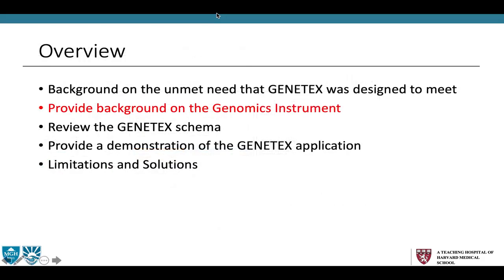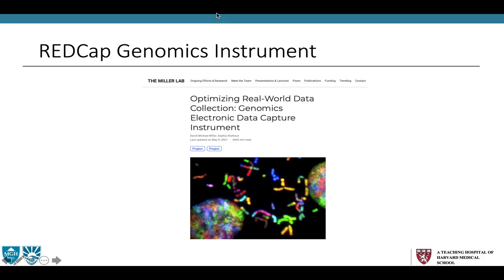Moving on to the genomics instrument — we've previously published the REDCap-based genomics instrument on our website, themillerlab.io. There we provide the data dictionaries as a downloadable CSV file. Once downloaded, it can be uploaded into REDCap, and the genomics instrument can then accompany the Genetix R package and Shiny app. It's essentially designed to house the mined structured data. To get access to details on how we optimized user experience and user interface, as well as obtaining the data dictionary, you just need to find the post.